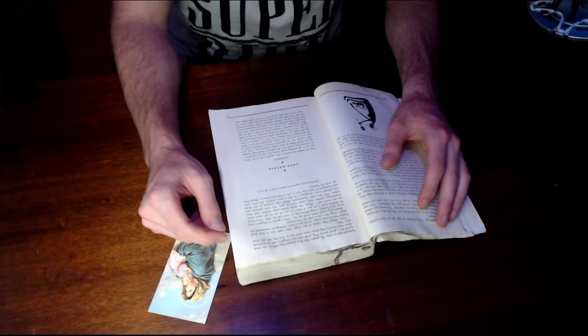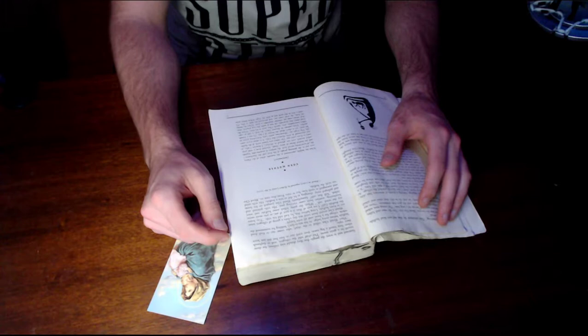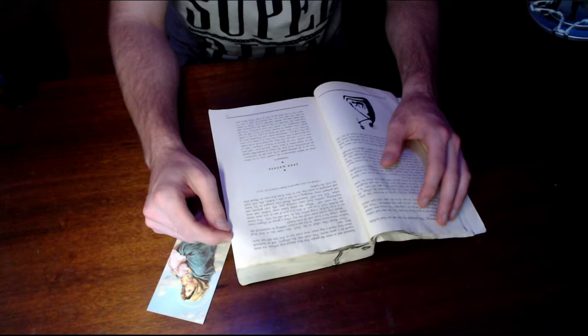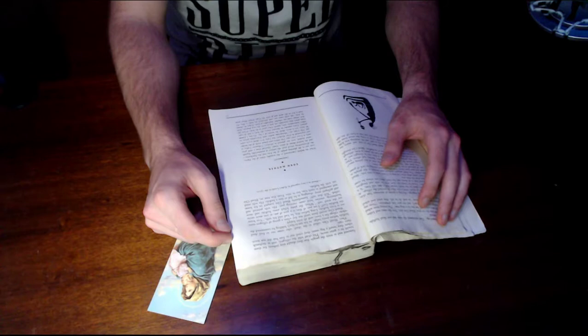The oldest corn found north of the border was discovered in New Mexico's Bat Cave. It is about 5,500 years old.